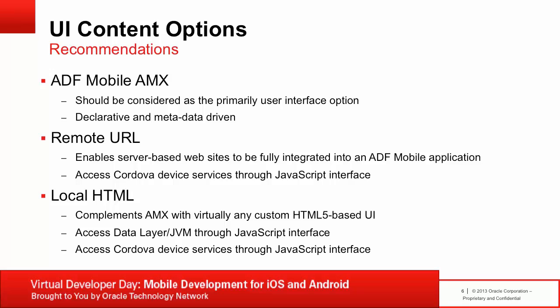Remote URL is useful to integrate server-generated web pages fully into an ADF Mobile application. If you have an existing website that needs to access device services, you can add the website into the ADF Mobile application and call the Cordova plugin through the JavaScript interface — for example, calling the camera to take a picture and upload it to the server. Local HTML is very useful in complementing AMX components with virtually any HTML5-based user interface, and local HTML pages can still access the JVM and Cordova plugins through the JavaScript interface.